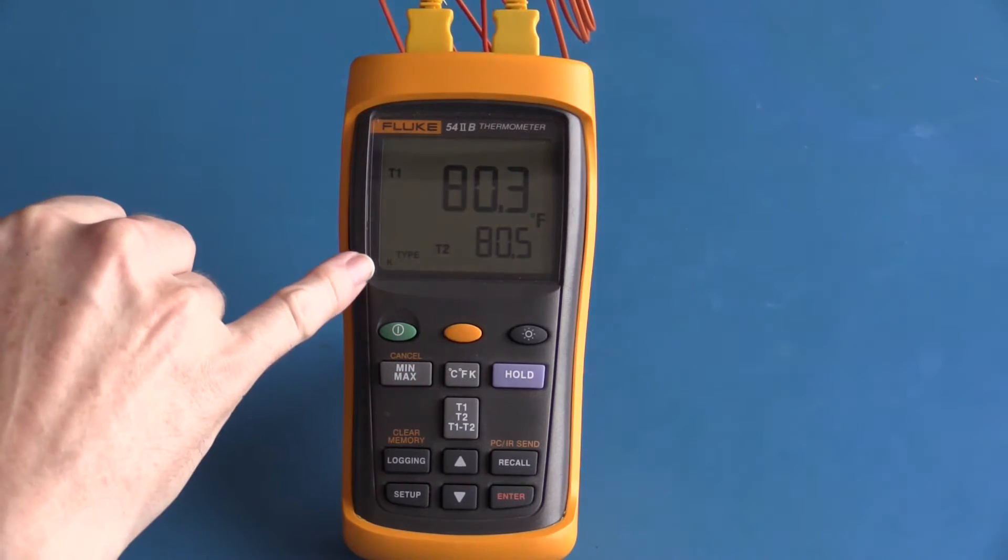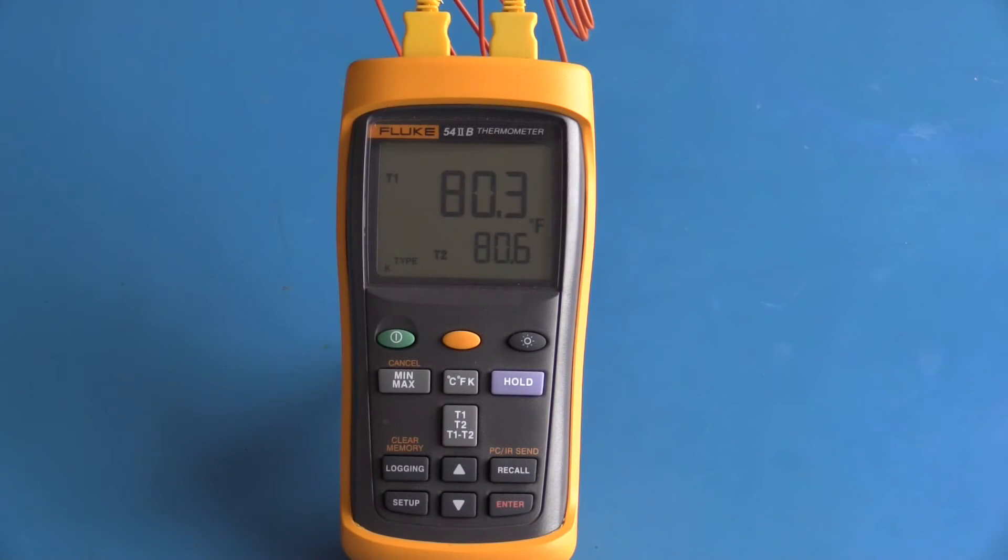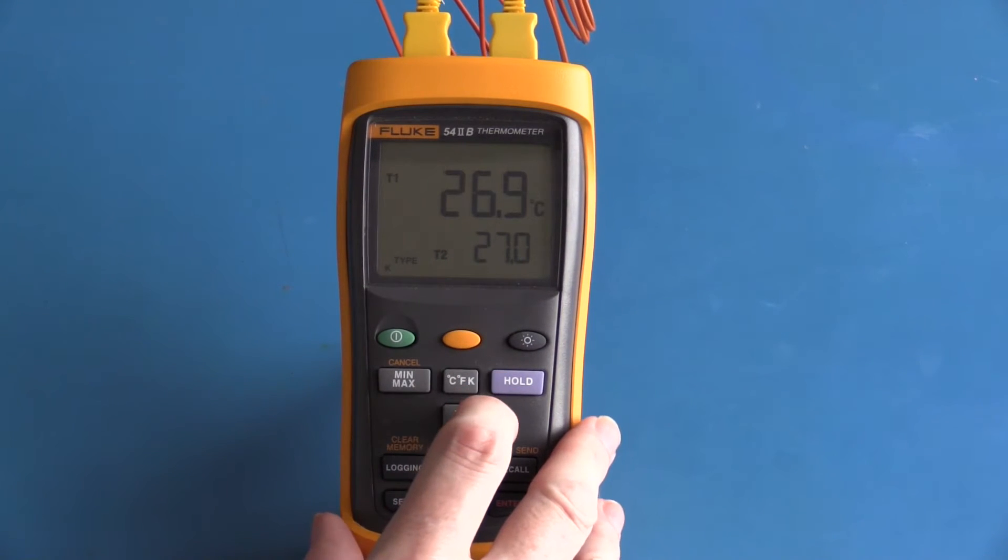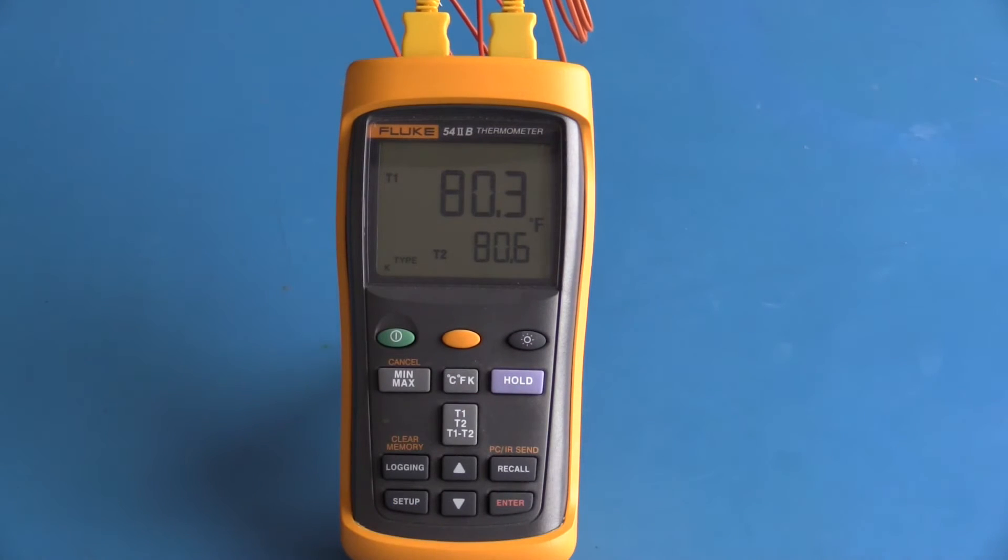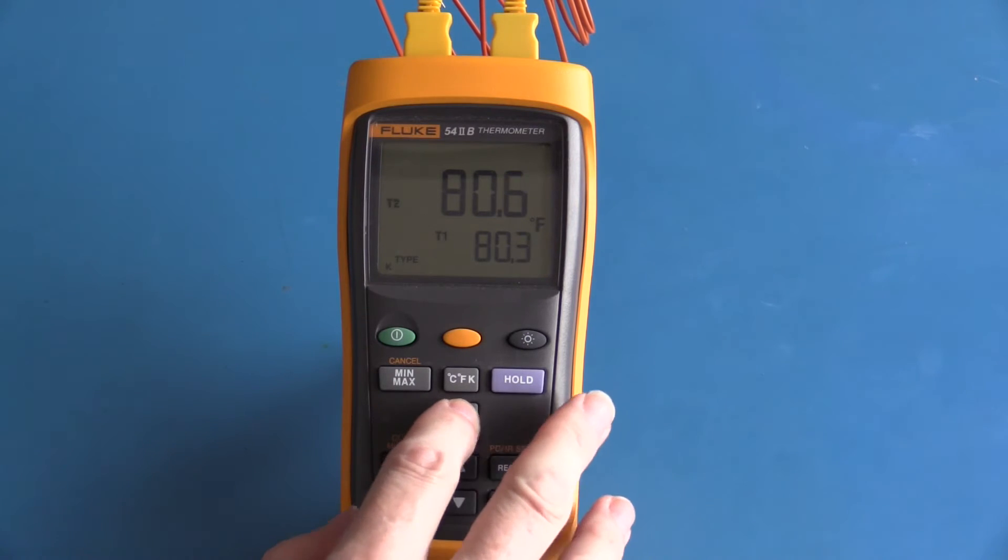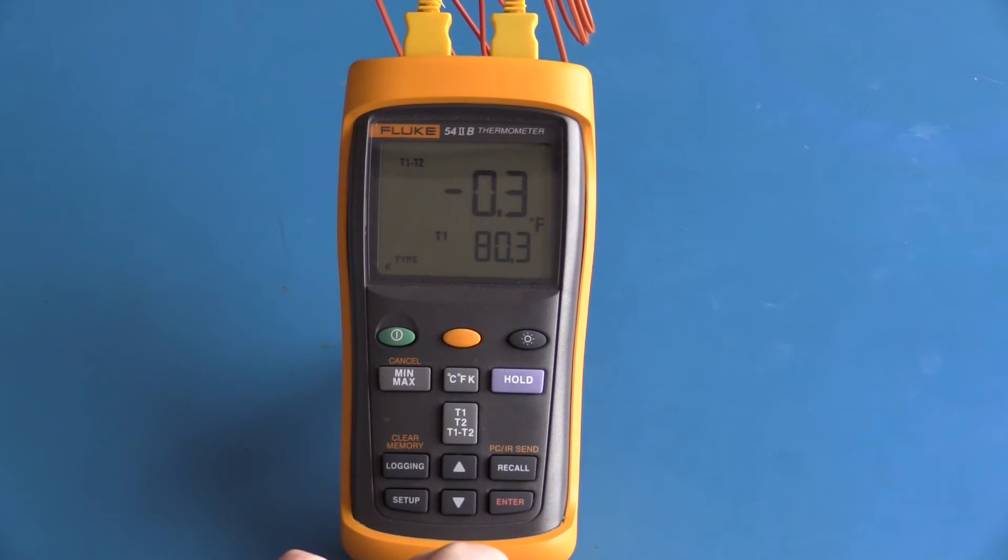Here on the left hand side it's showing that I'm using a K-type thermal couple. This thermometer provides the option to have the temperature displayed in Fahrenheit, Kelvin, or degrees Celsius. I typically prefer to use degrees Fahrenheit. The primary display can show T1, T2, T1 minus T2 with the secondary display showing T1, or T1 minus T2 with the secondary display showing T2.